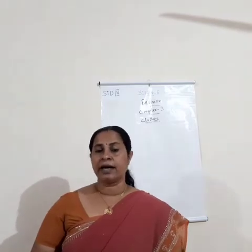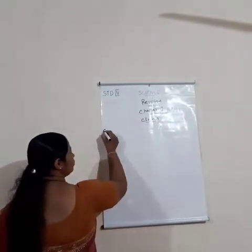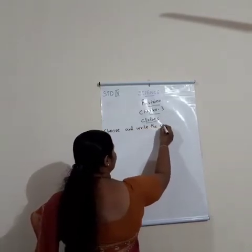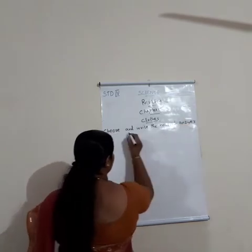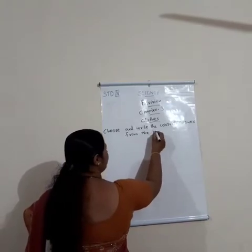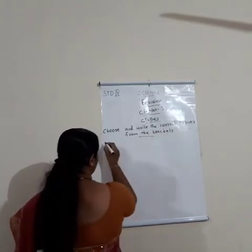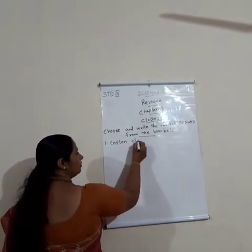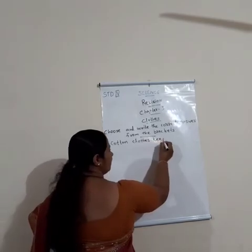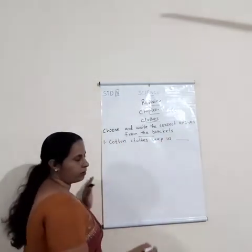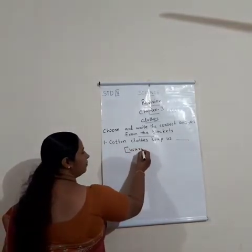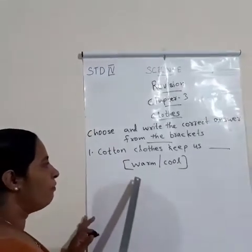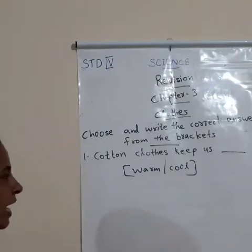Choose and write the correct answer from the brackets. First question: cotton clothes keep you blank — warm or cool? The correct answer is cool.